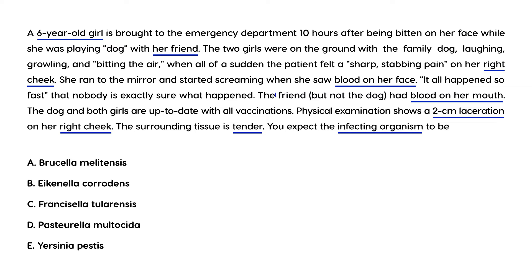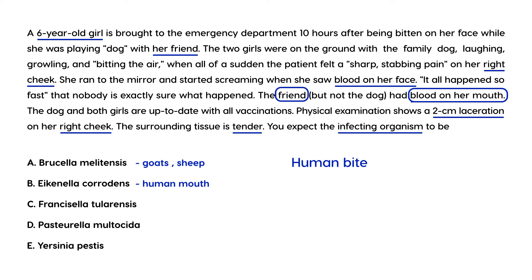Since the friend had blood on her mouth, this is a human bite. In the human mouth, the bug that lives is Eikenella corrodens. Some other organisms and their sources: Brucella is acquired from animals such as goats and sheep; Francisella tularensis comes from rabbits; Pasteurella multocida comes from animals such as dogs and cats; and Yersinia pestis comes from a rat flea.